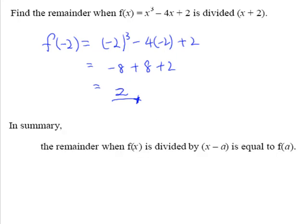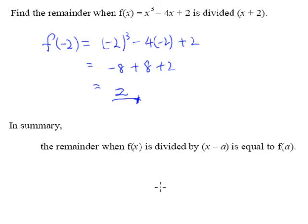In summary, the remainder theorem states that to find the remainder when f(x) is divided by (x + a) for any constant a, the remainder will be equal to f(−a) — simply substitute x = −a into the function, as shown in this short example. We will have a few more examples to show more complex situations where we use the remainder theorem.